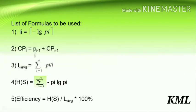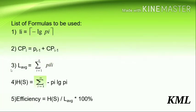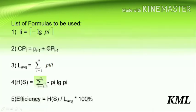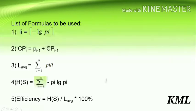CP is the cumulative probability, which equals P(i-1) plus CP(i-1), where P is probability and CP(i-1) is the previous cumulative probability. L_average equals summation from i=1 to n of Pi times Li. Entropy H(S) equals summation of negative Pi log base 2 Pi, and efficiency equals H(S) divided by L_average times 100.